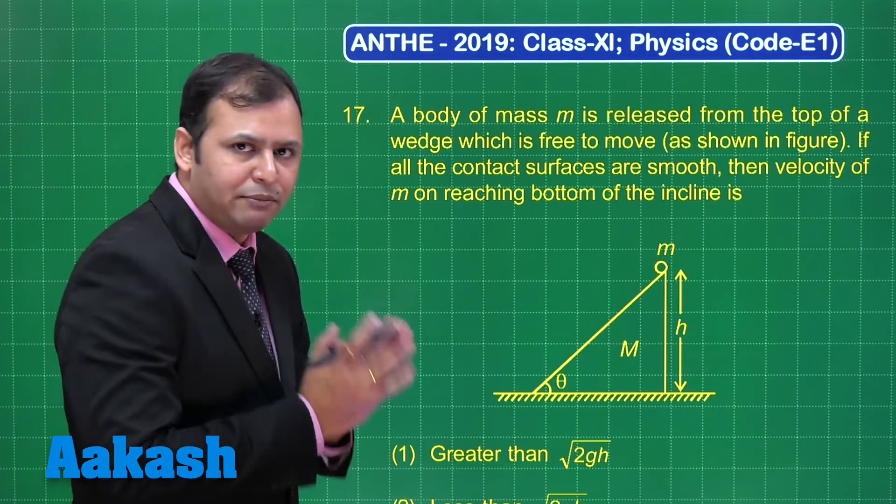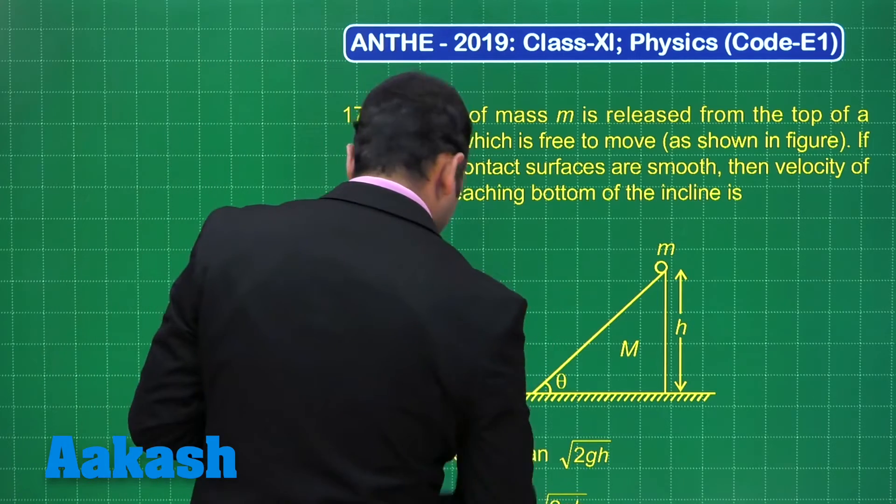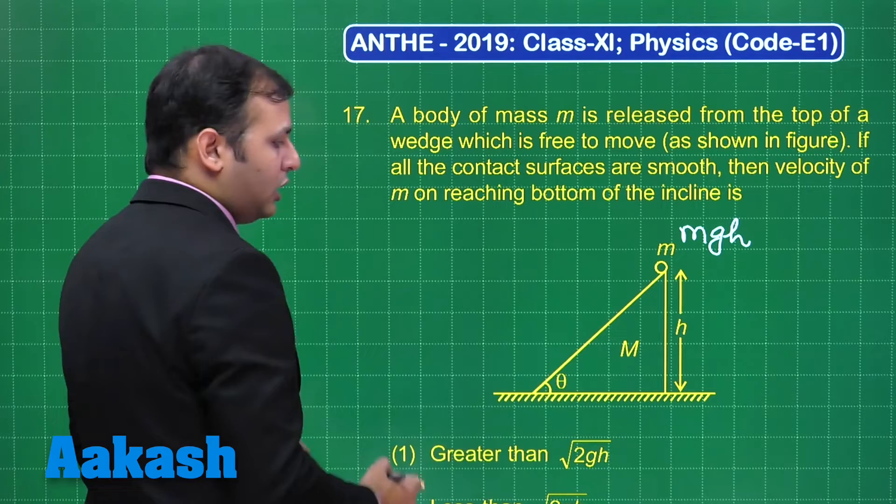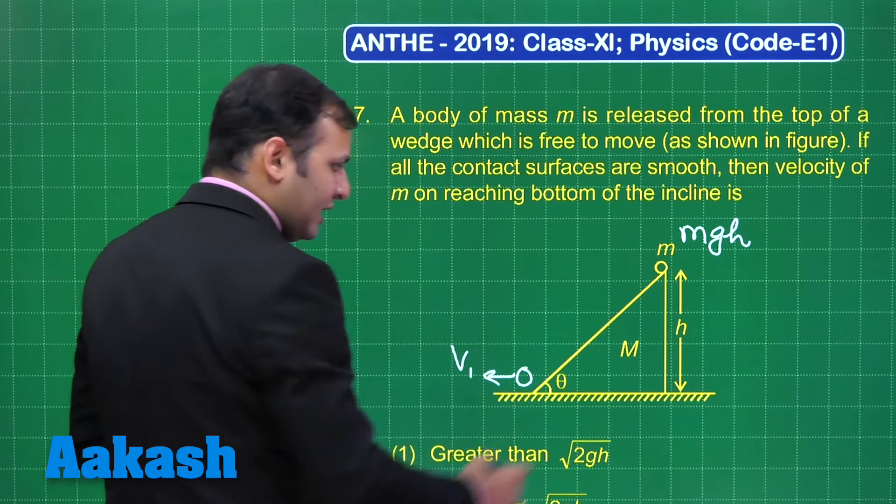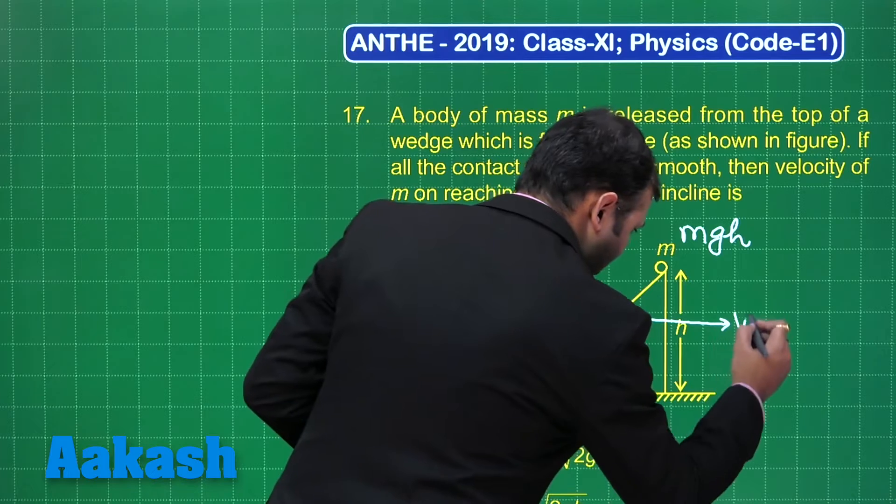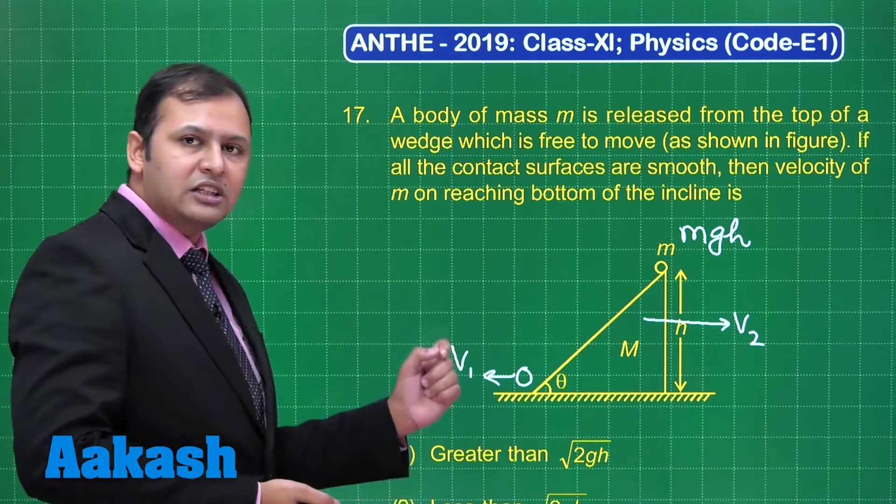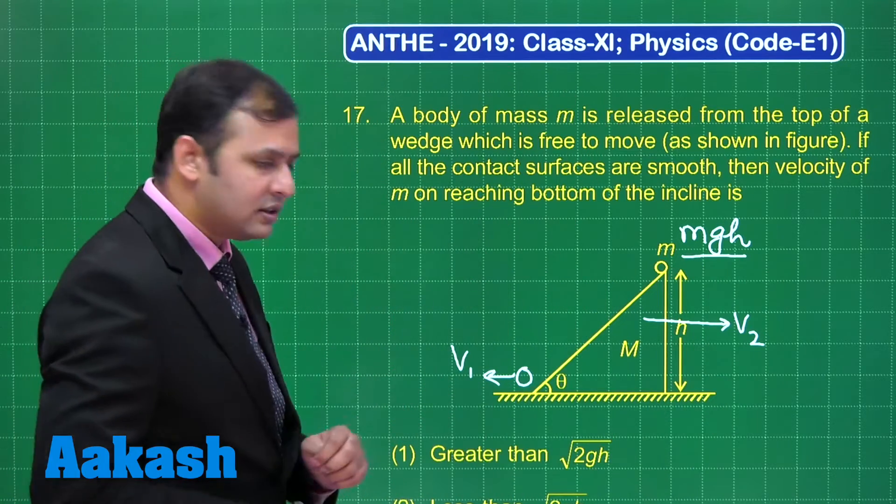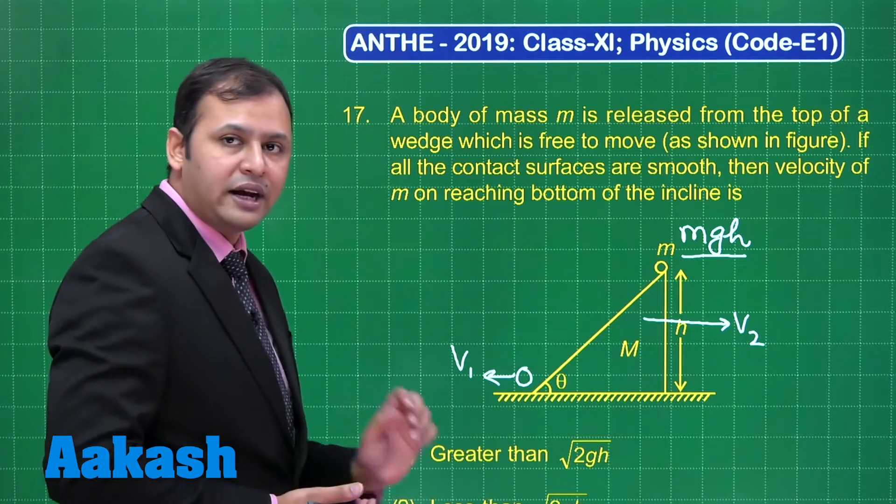It's a very simple application that the total energy of this mass here would be mgh. When it comes down, at the moment it comes down it will have some velocity v1 this side, and also this mass will move along this direction as velocity v2. So whatever energy we have here is utilized in two parts: giving kinetic energy to small m and capital M both.